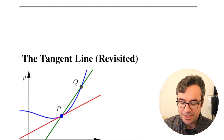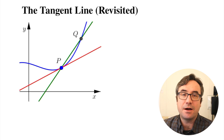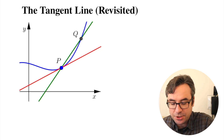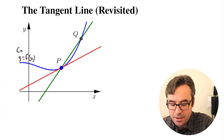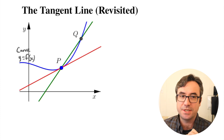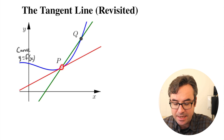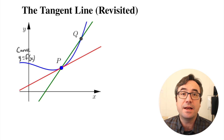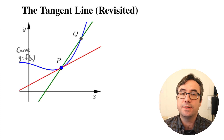To start off, we're going to go back to the idea of tangent lines. So the question is, if we have a curve y equal to f of x, and we have our point of tangency P that we're interested in finding the tangent line at — how do we actually do this?